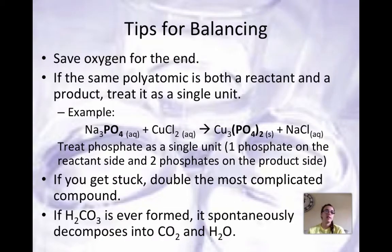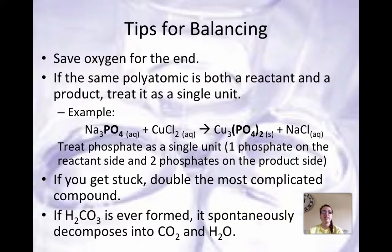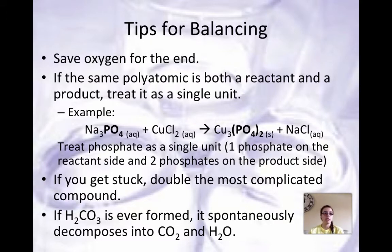Here are some tips for balancing equations. First, save oxygen for the end — oxygen can make everything very complicated. Second, if the same polyatomic ion appears as both a reactant and a product, treat it as a single unit. For example, treat phosphate as a single thing. On the left side of the equation you have one PO4, on the right side you have two PO4s — balance it like that. That will make everything much easier.